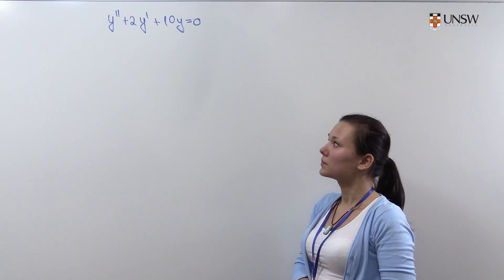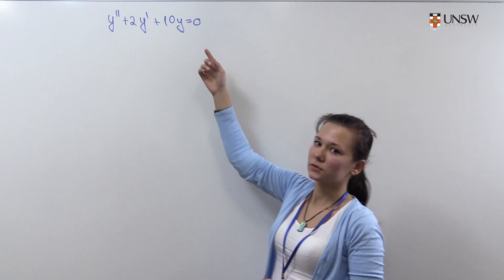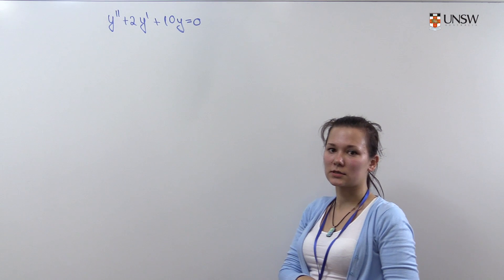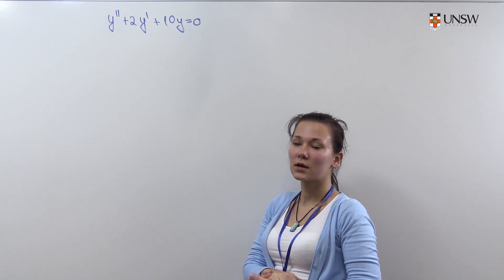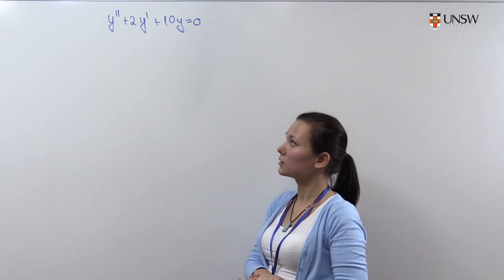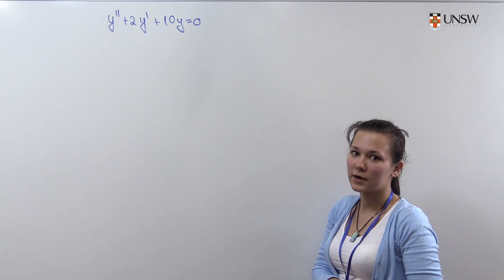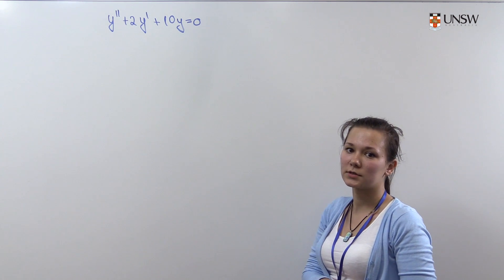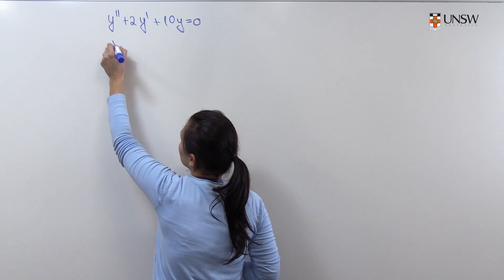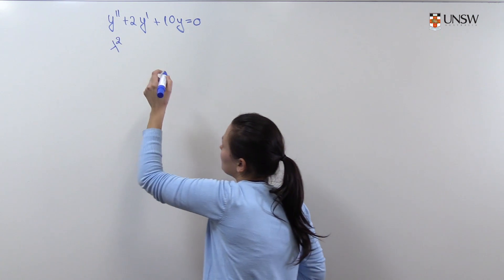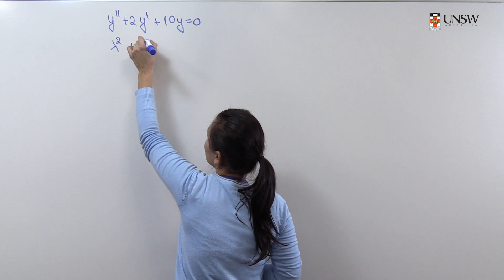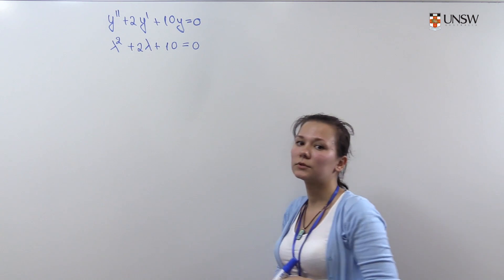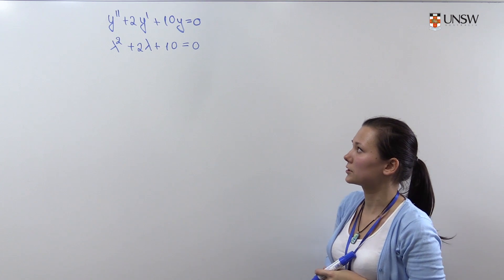As in the preceding example, we need to find the general solution of this differential equation. Again, this is a linear differential equation of the second order with constant coefficients. To find the general solution we need to first solve the characteristic equation. The corresponding characteristic equation will be lambda squared plus 2 lambda plus 10 equals 0, and we need to find the roots of this quadratic equation.